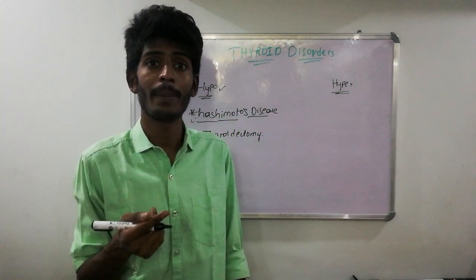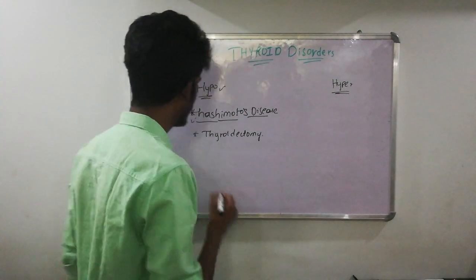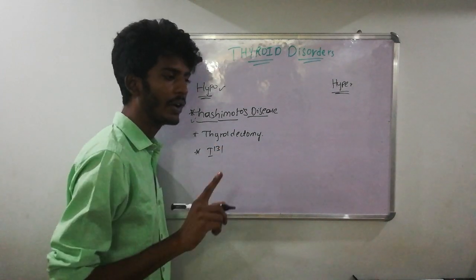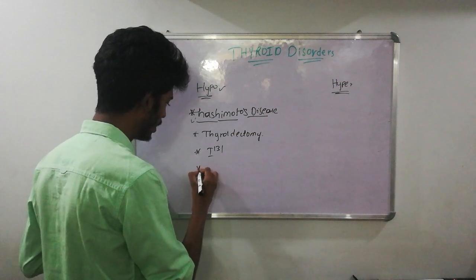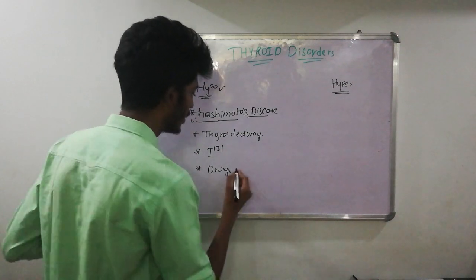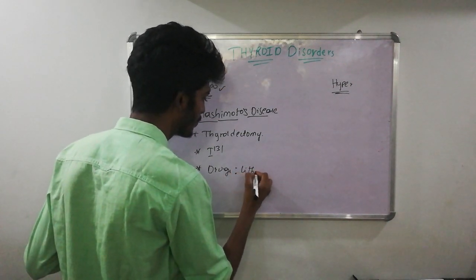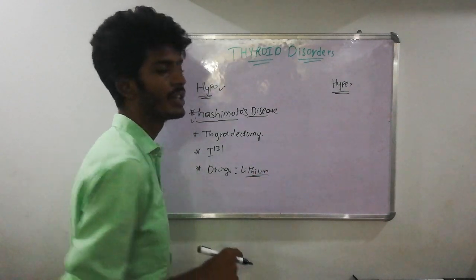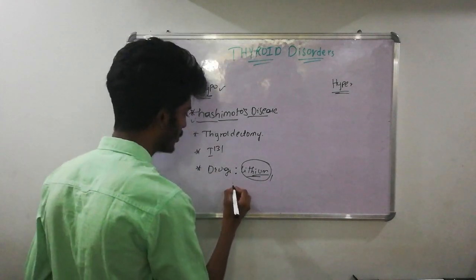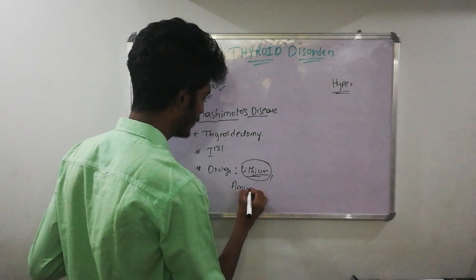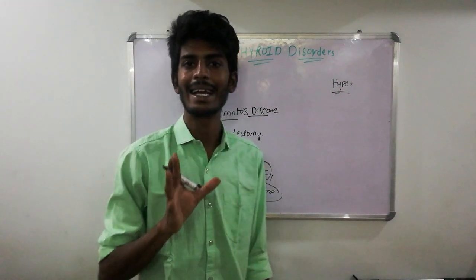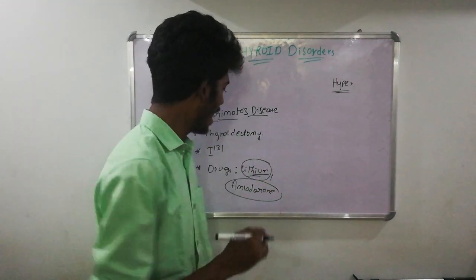Hypothyroidism can also be a complication of thyroidectomy. After a subtotal or total thyroidectomy — performed perhaps due to malignancy — the patient no longer has a thyroid gland and will develop hypothyroidism. It may also be associated with iodine-131 therapy. Drugs can cause hypothyroidism as well: lithium, used in the treatment of mania, and amiodarone — an iodine-containing class 3 anti-arrhythmic drug — which can cause either hypo- or hyperthyroidism.